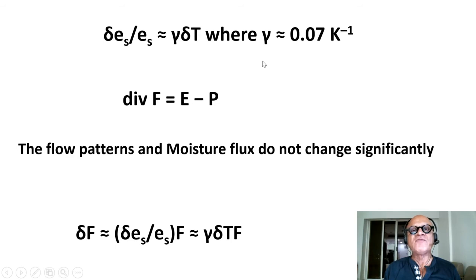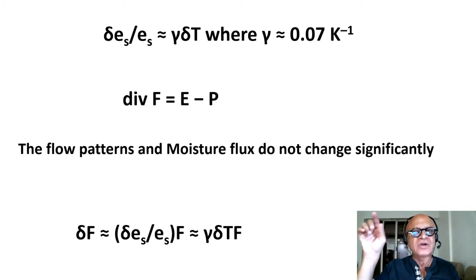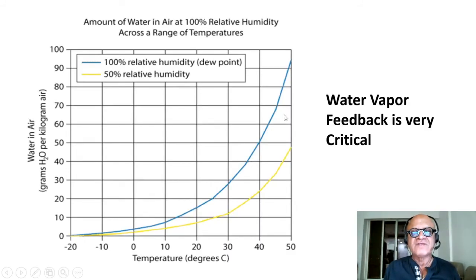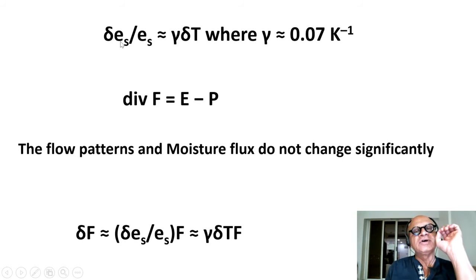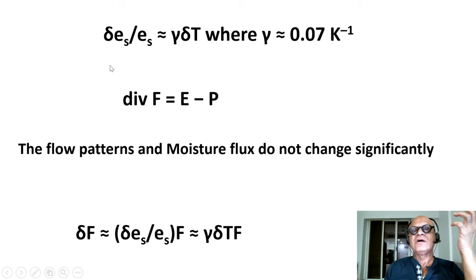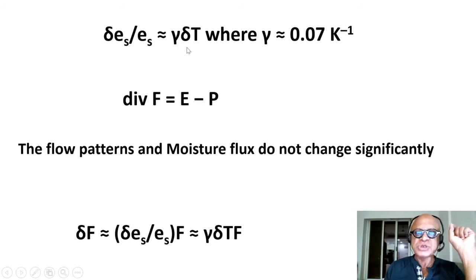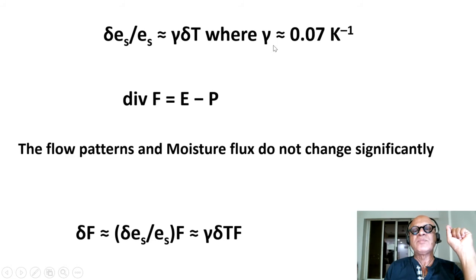The water vapor pressure in the air follows the form: ES = A × exp(β × T), a constant times an exponential times beta times temperature — an equation that fits the saturation curve. To find the humidity response to a change in temperature, you take the derivative: δES/δT, the saturation water vapor pressure with respect to temperature. Since it's an exponential, this simplifies to δES/ES ≈ γ × δT, where γ is approximately 0.07 per Kelvin.